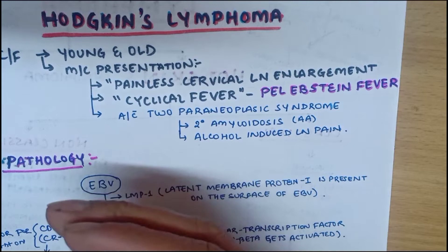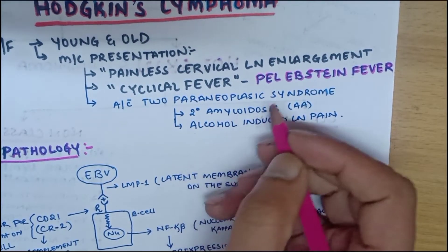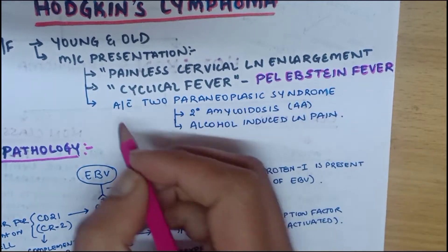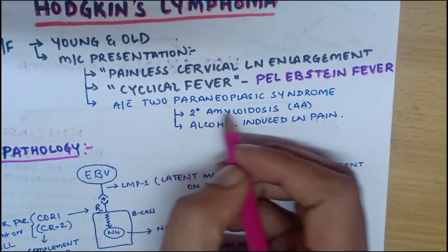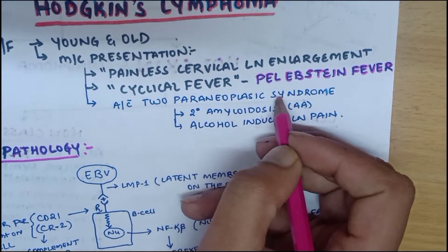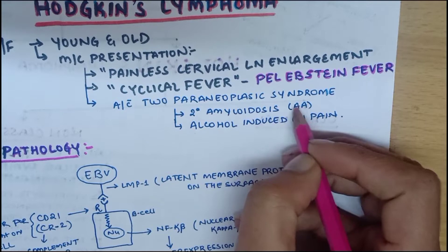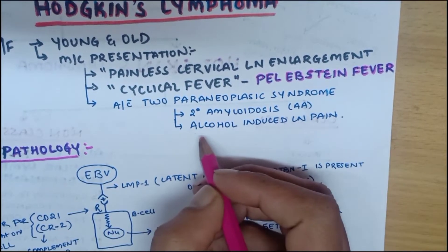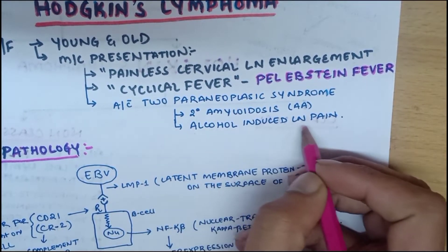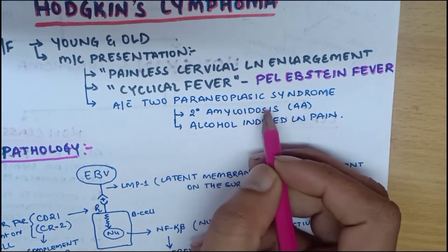It is also associated with two paraneoplastic syndromes. The two paraneoplastic syndromes are secondary amyloidosis, written as AA, and alcohol-induced lymph node pain.